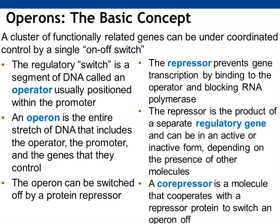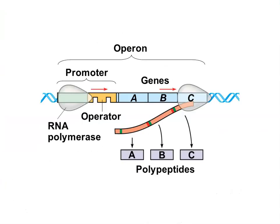When that repressor is bound to the DNA, it prevents gene transcription by preventing RNA polymerase from binding. There is a separate regulatory gene that the repressor protein is made from, and it can be made in both an active and inactive form, depending on other things that are present. Co-repressors are able to interact with repressor proteins and can facilitate turning an operon off. RNA polymerase has to move through the operator region to transcribe the genes, so if the operator has been blocked by the repressor, RNA polymerase cannot proceed and those genes won't be transcribed.